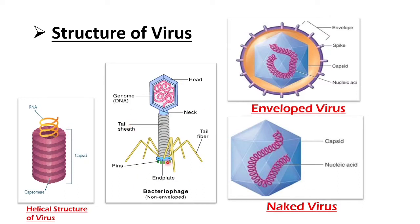This is the structure of a bacteriophage, which is non-enveloped. It consists of the head portion, the genome — which could be either DNA or RNA — the neck, tail sheath, tail fiber, end plate, and fins.